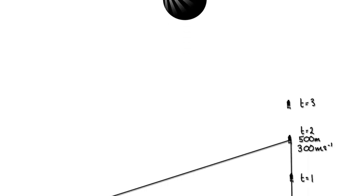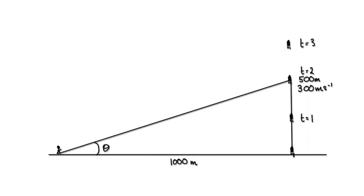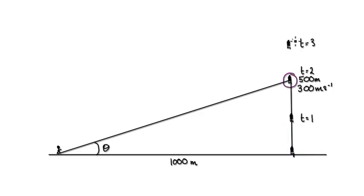Let's give you a related rates example. Let's say you've got a rocket launch. So here when t equals 0, the rocket is here. One second later, the rocket is here. Another second later, the rocket is here. And a third second later, the rocket is here. The rocket is travelling at a constant speed of 300 metres per second.